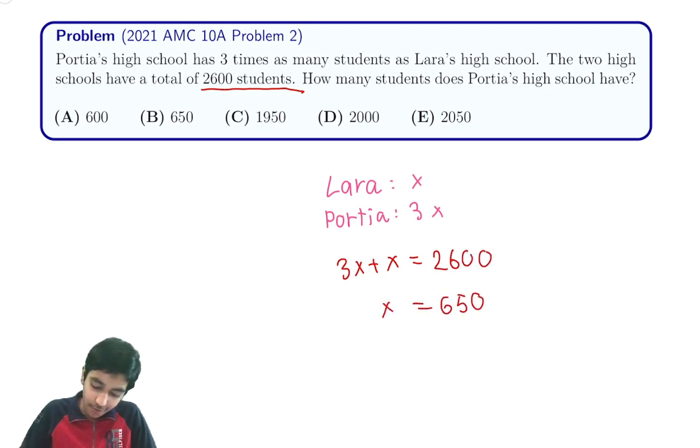So a common mistake is just to fall for the trap answer and put 650. But remember what is the question asking for? How many students does Portia's High School have? So we have to find 3x.